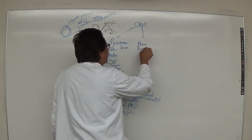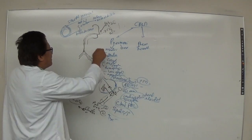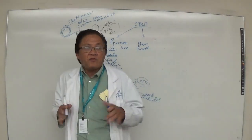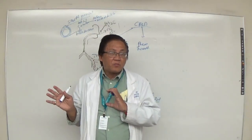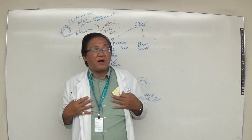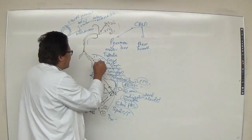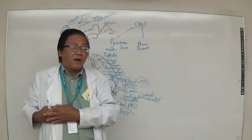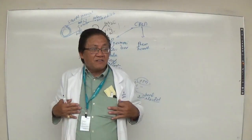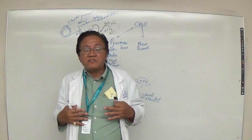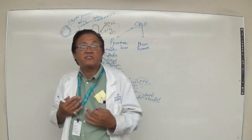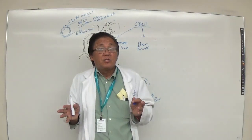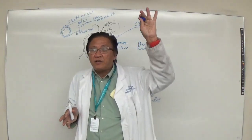Pneumothorax is the presence of air in the pleural cavity. The lung is surrounded by pleura: the visceral pleura covers the lung surface, the parietal pleura is attached to the thoracic wall, and the space between them is the pleural cavity. These are serous membranes that secrete pleural fluid for lubrication, reducing friction during inhalation and exhalation.